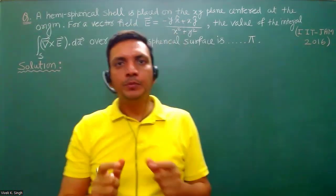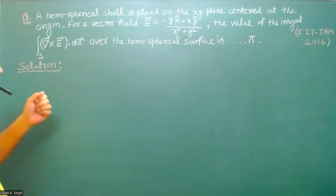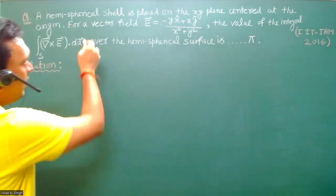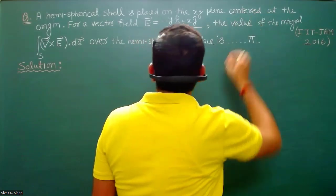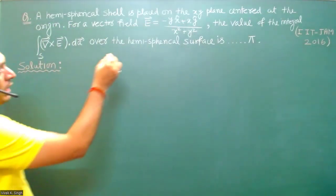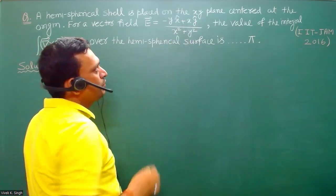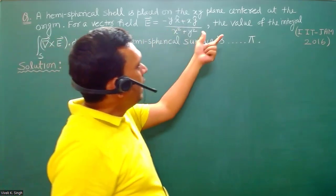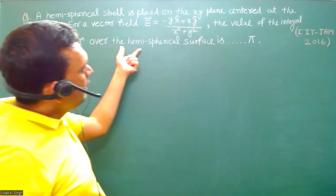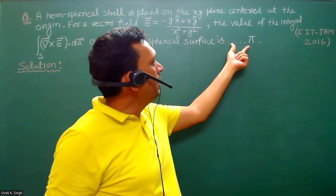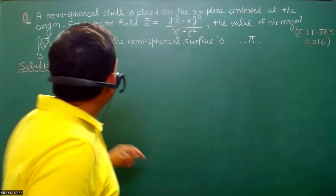Hello everyone, welcome to Physics by Physics. In this question, a hemispherical shell is placed on the xy-plane centered at the origin. A vector field E is given as (-yx̂ + xŷ) / (x² + y²). We have to find the value of the surface integral of (∇×E)·dA over the hemispherical surface, and write the answer in units of π. It is a numerical answer type question, where dA is the elemental surface area.